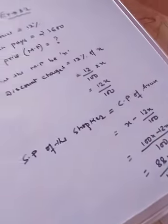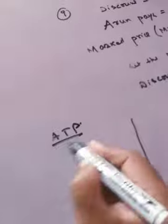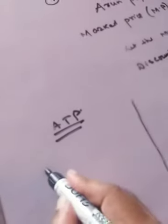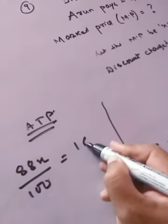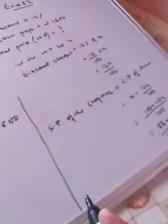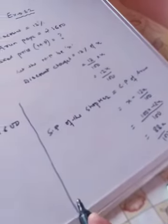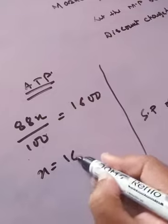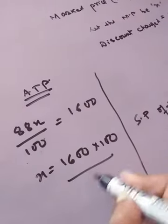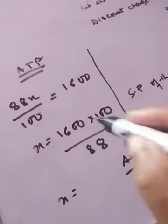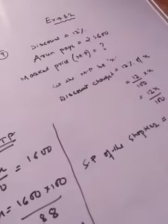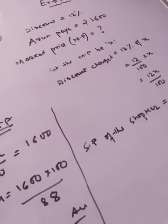This price of 88X/100 is already given as 1,600. That means these two are equal. So according to the problem, 88X by 100 equals 1,600. Now solve this to find the value of X. I will not give you the solution for this — these sums are extremely important students.